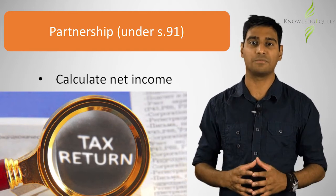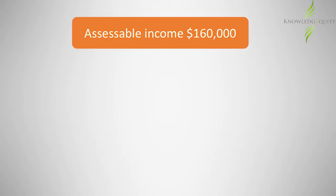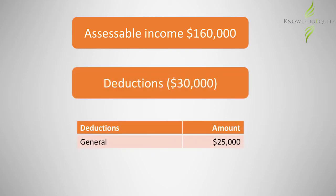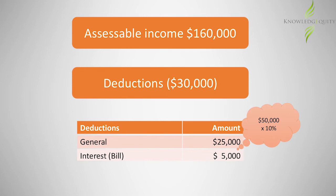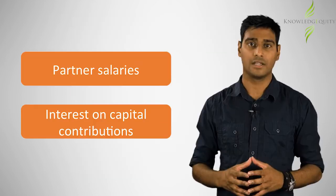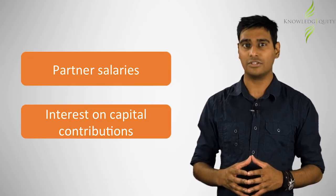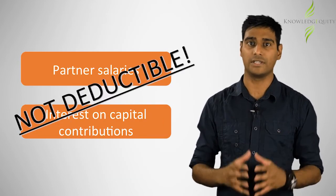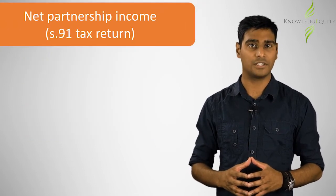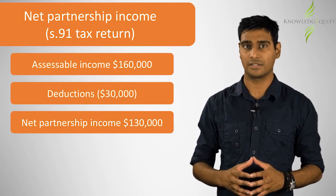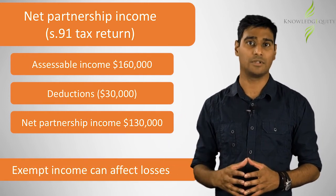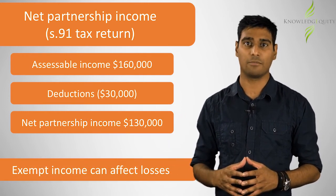The first step is for the partnership under section 91 to calculate its net income and lodge this information in the partnership tax return. The partnership has assessable income of $160,000. $25,000 in general deductions is subtracted from this, as well as the 10% interest of $5,000 to Bill on his loan. Therefore, the total deductions are $30,000. The partnership salaries and interest on capital contributions are not deductions, so the net income of the partnership is $130,000.